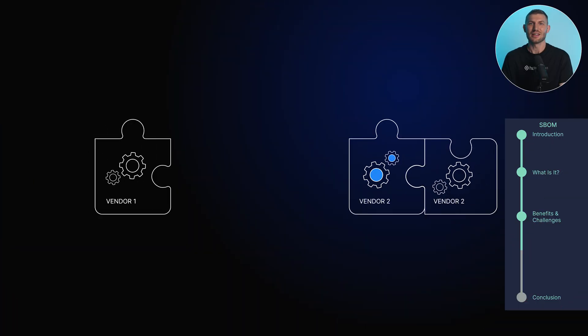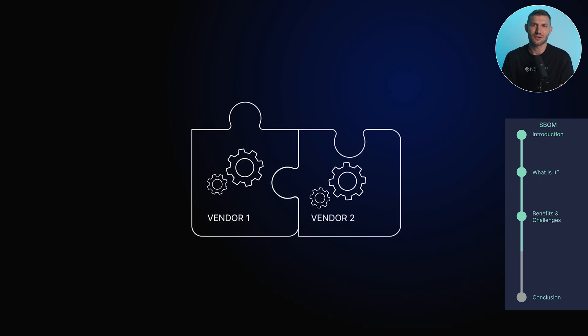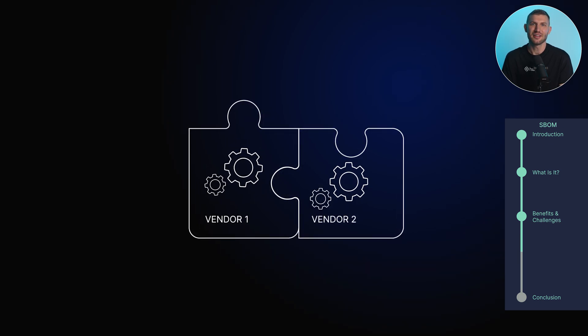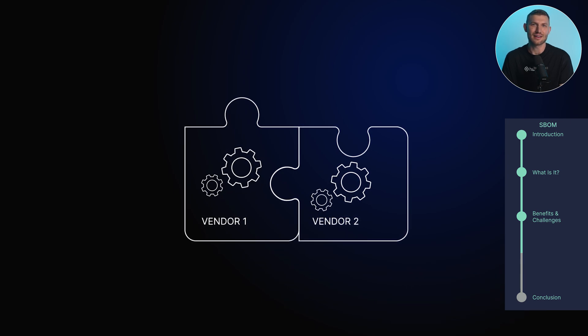Efficient software supply chain management is another advantage of using an SBOM. It allows organizations to track and manage dependencies between different components, making it easier to identify and resolve compatibility issues. Additionally, an SBOM promotes effective communication and collaboration between software vendors, developers, and end users, ensuring smooth integration and deployment of software applications.